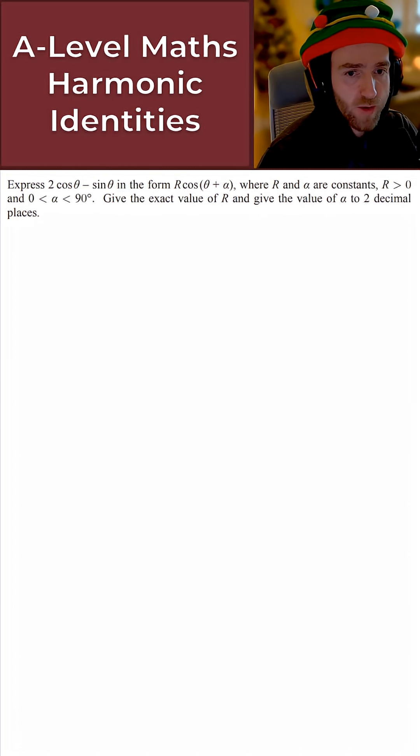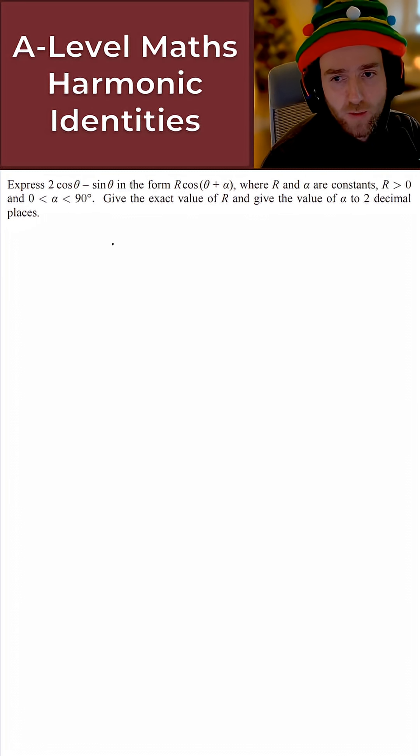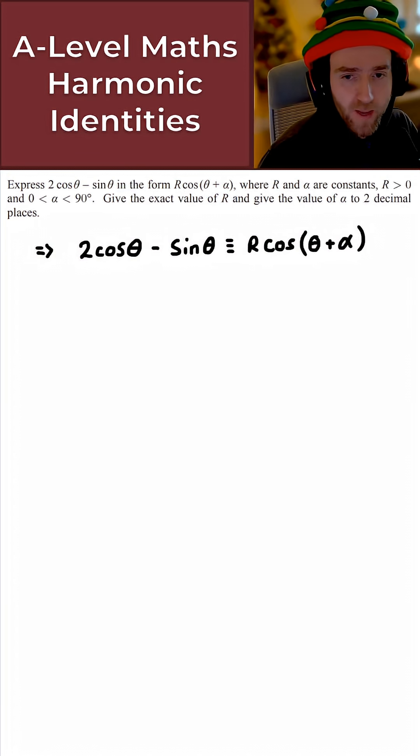Okay, so let's just work through this question together and let's see how we get on. So for this question then, all we want to do here is express 2 cos theta minus sine theta in this form here. And I won't bother reading out the rest of the waffle. It's all pretty standard stuff. Alright, so basically what we're saying here then is we can express 2 cos theta minus sine theta in this form here. So where do we begin then?